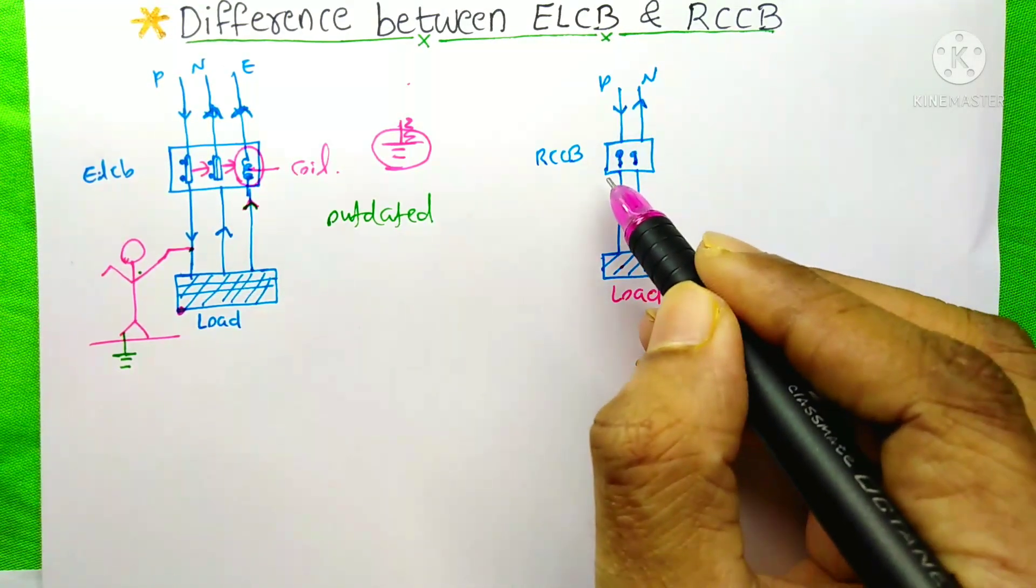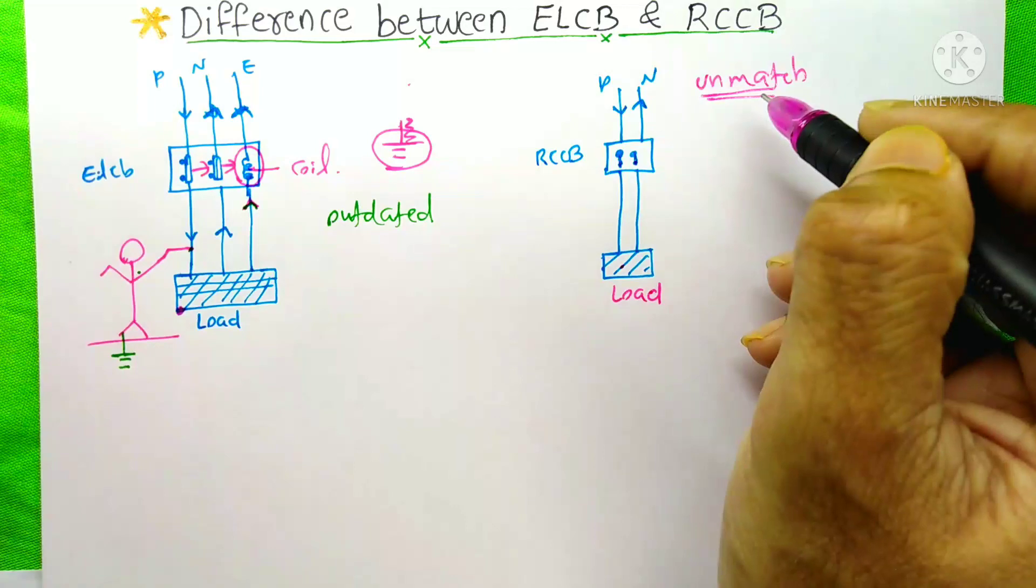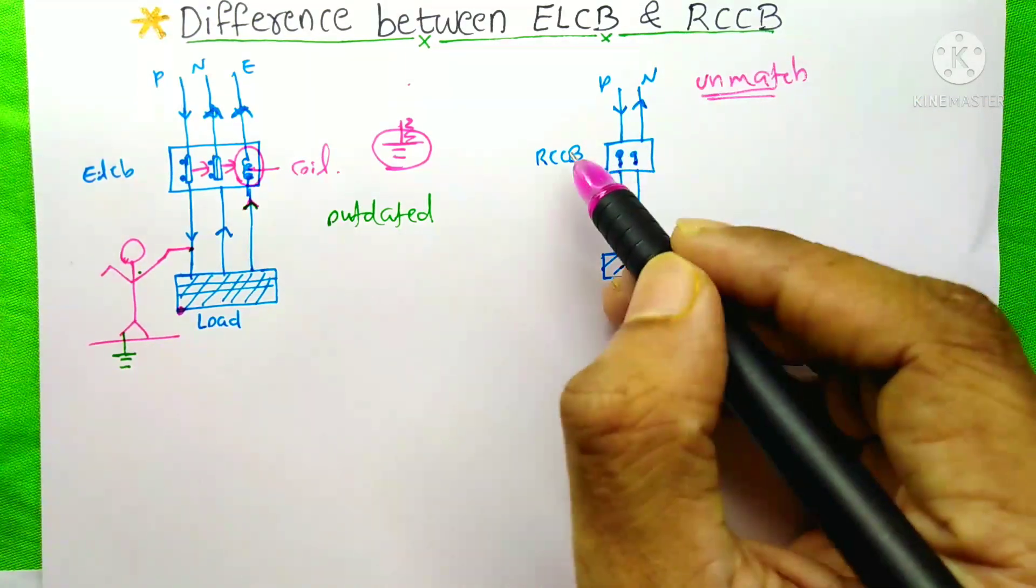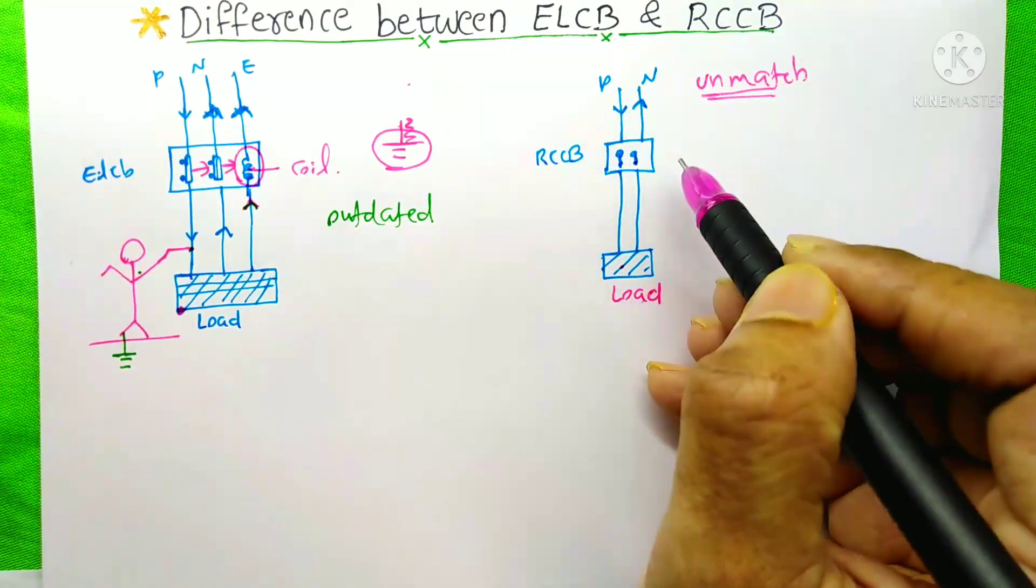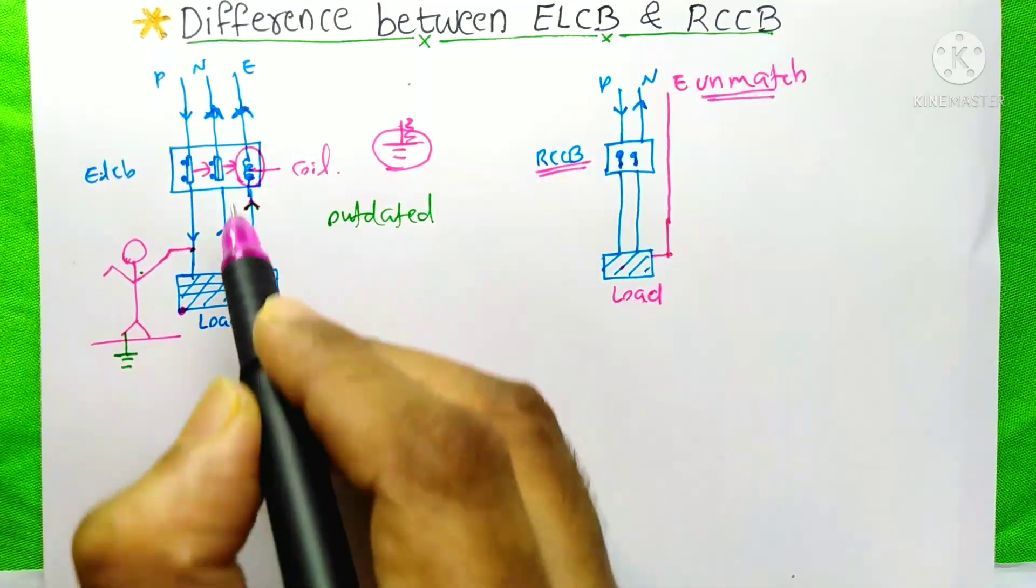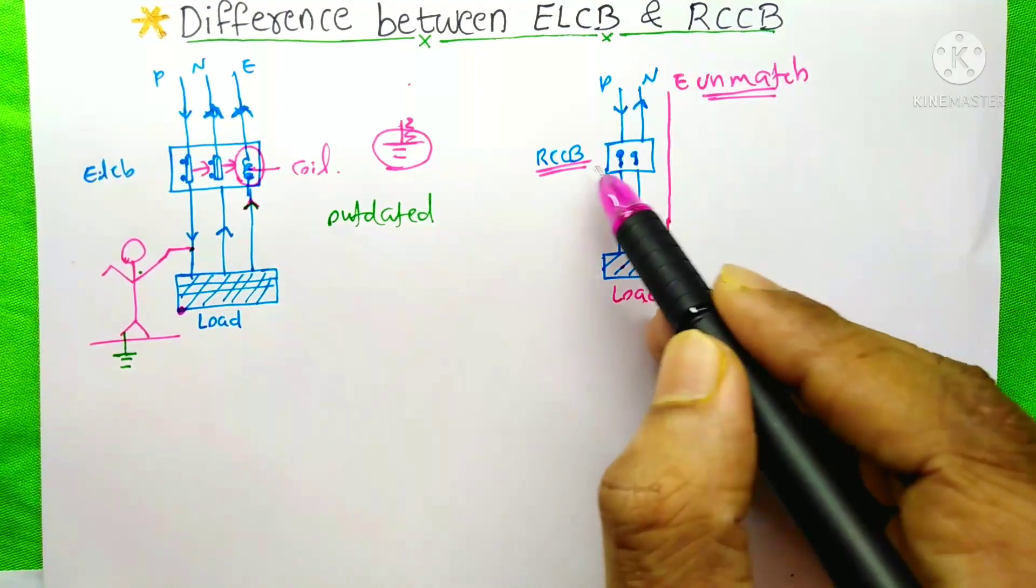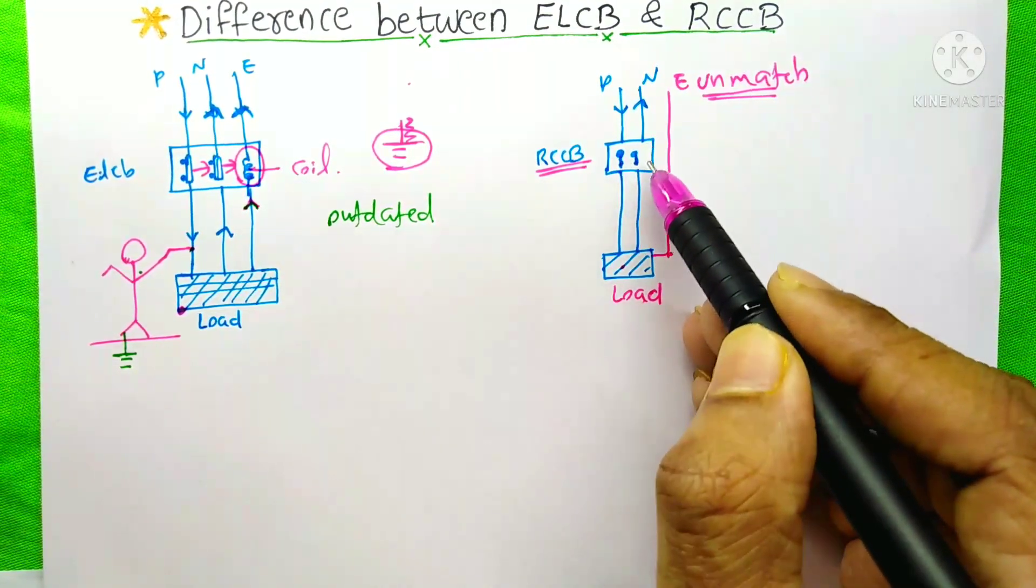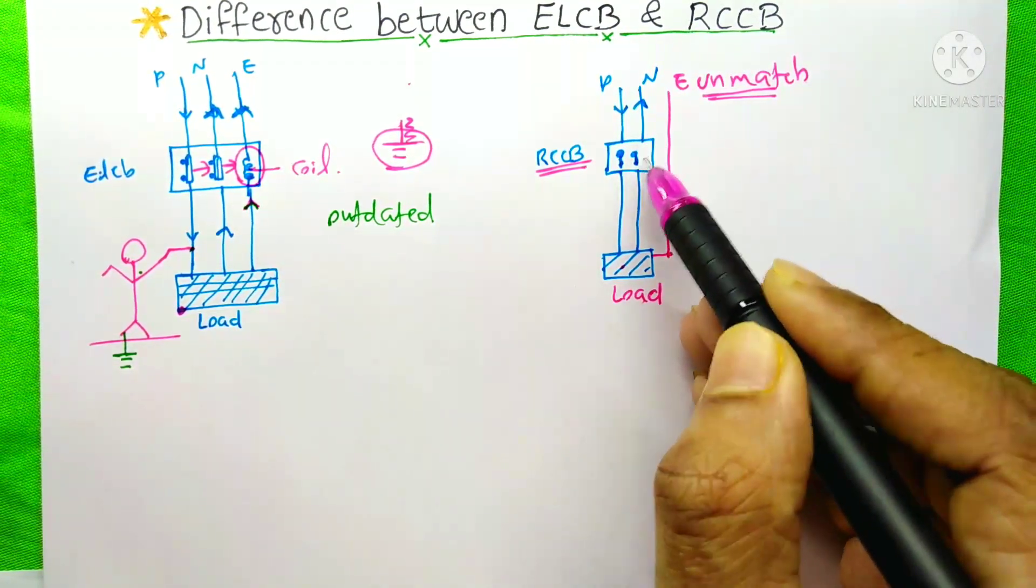This RCCB will sense that one. If any unmatch is detected by this RCCB regarding the phase and this neutral current, at that time, the RCCB actually does not need an earth pole over here.